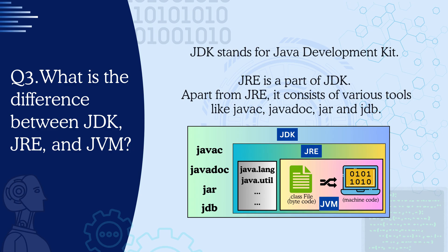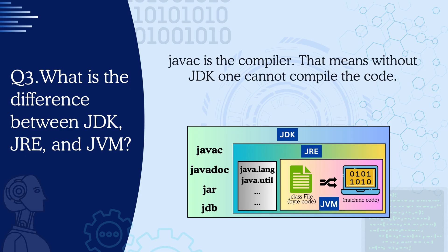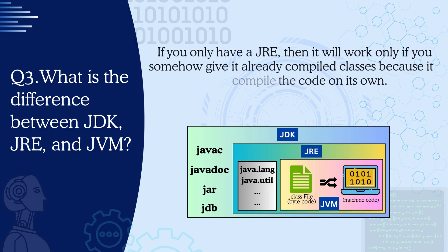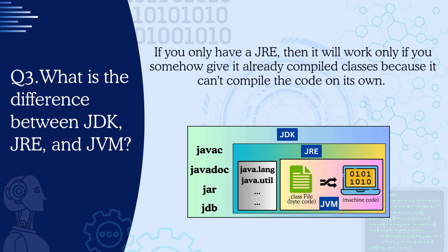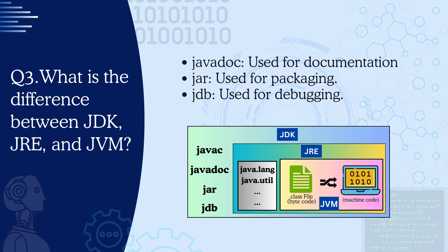JDK stands for Java Development Kit. JRE is a part of JDK. Apart from JRE, it consists of various tools like javac, javadoc, jar, and jdb. Javac is the compiler, which means without JDK, one cannot compile the code. So if you only have a JRE, it will work only if you give it already compiled classes, because it can't compile the code on its own — it will need JDK for that. The rest of the tools are used for documentation, packaging, and debugging respectively.